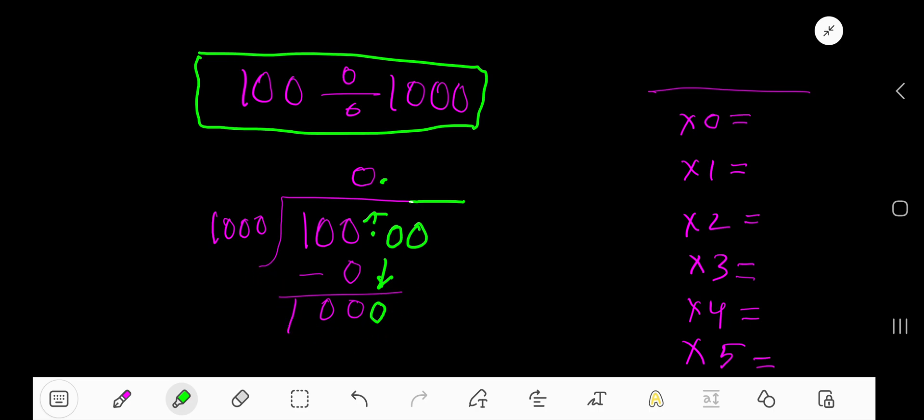1000 goes into 1000 how many times? So let me show you the multiplication table of 1000. 1000 times 0 is 0. 1000 times 1, just add 1000 with the previous step, that is 1000.